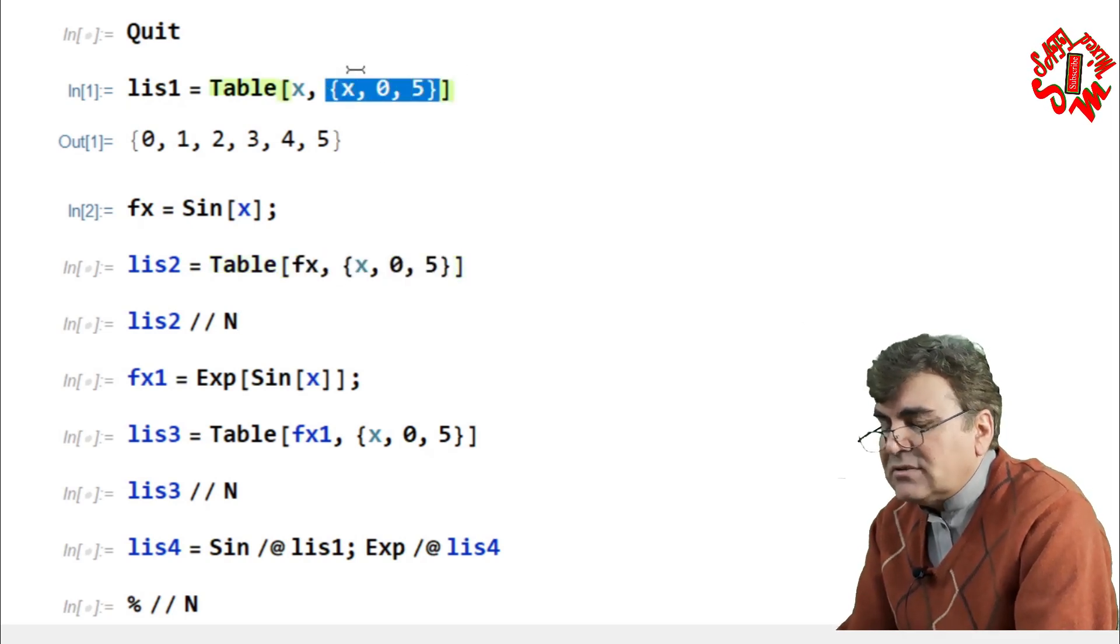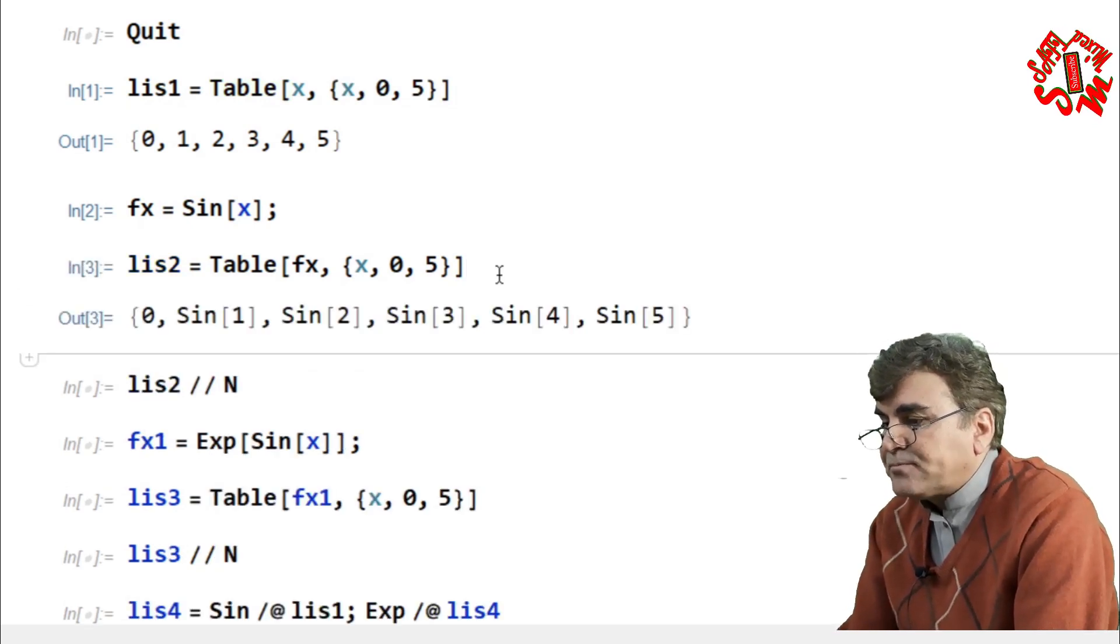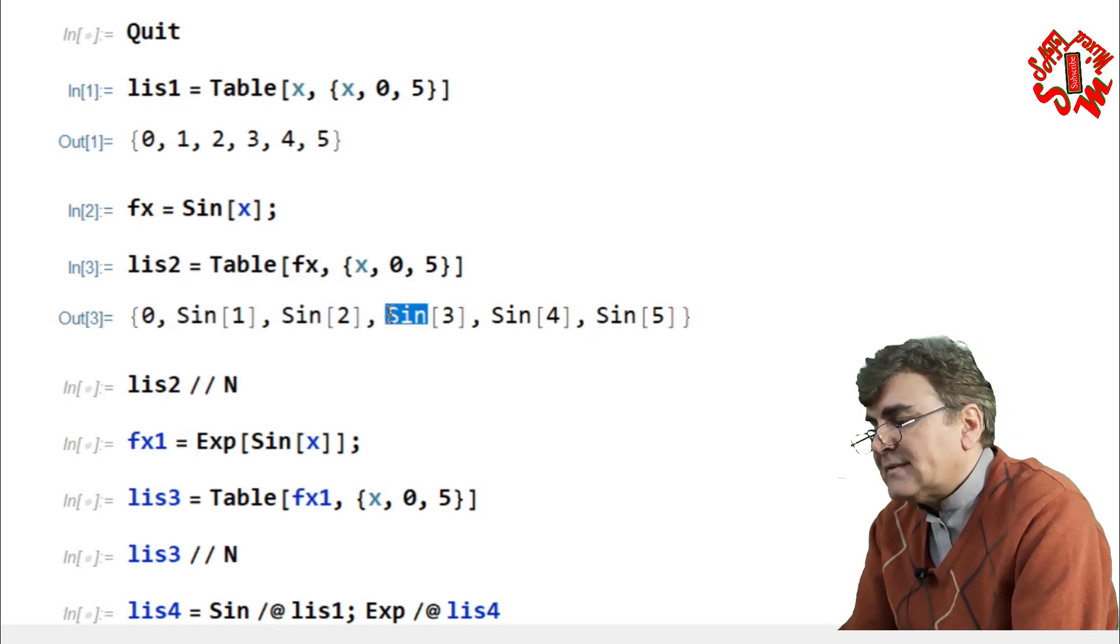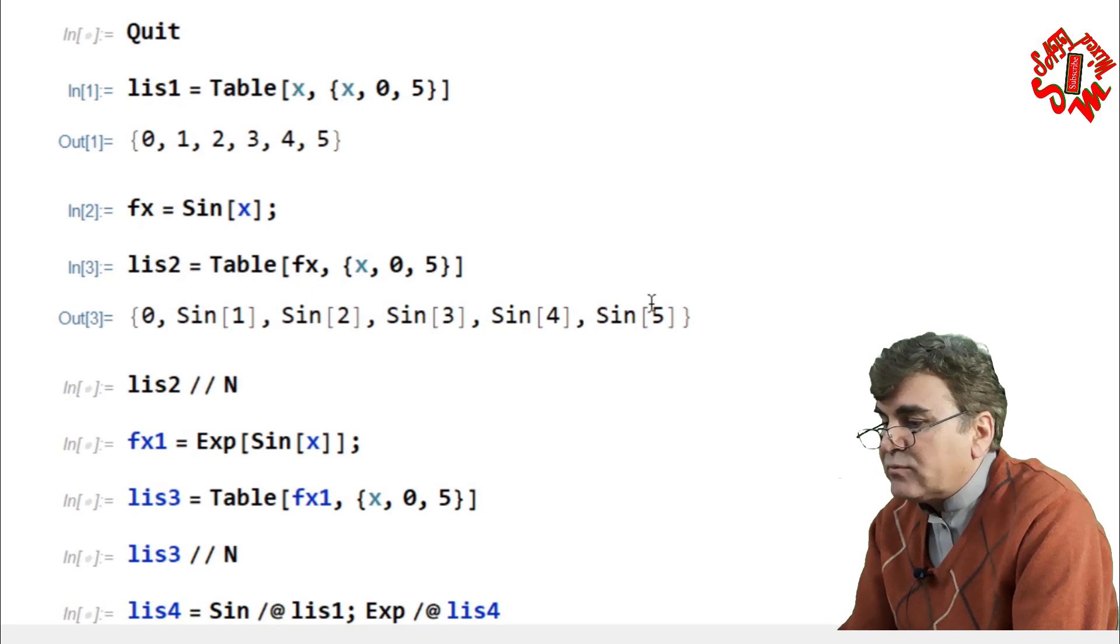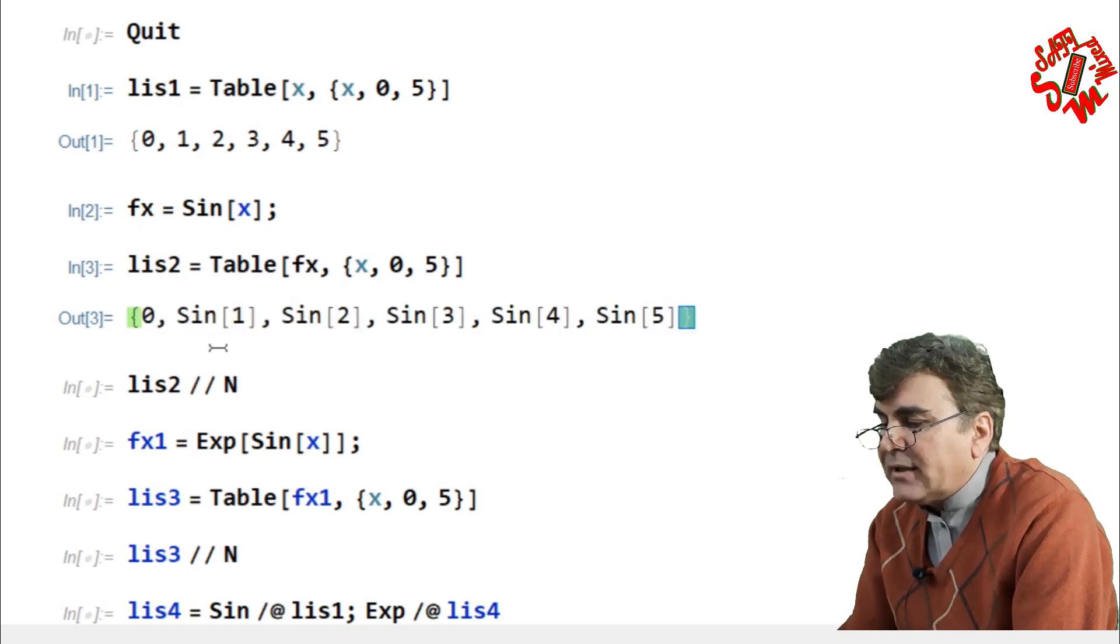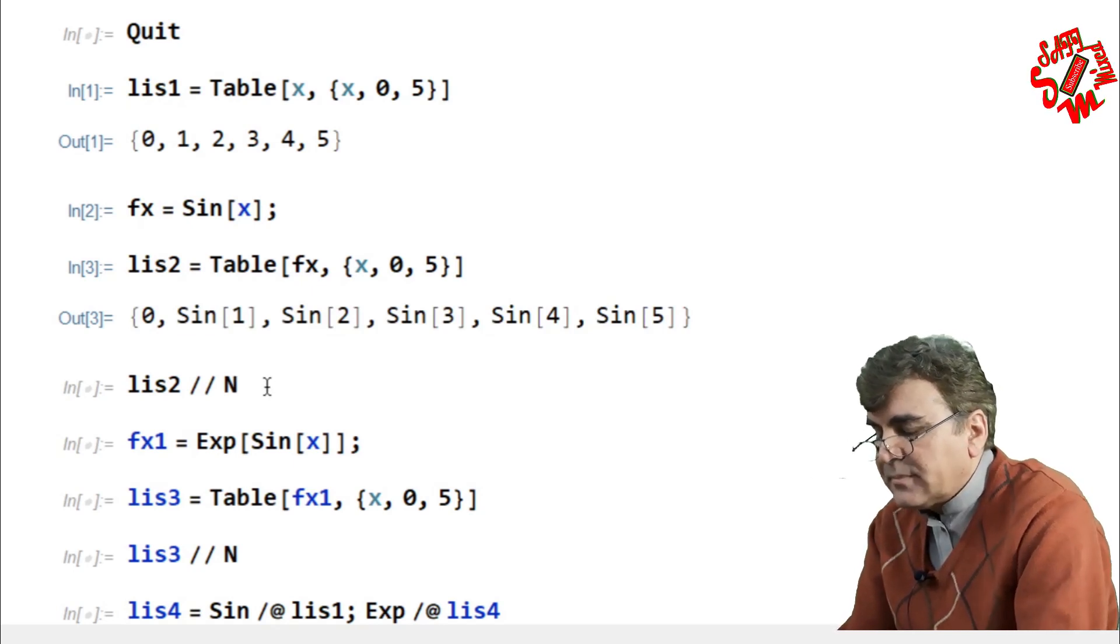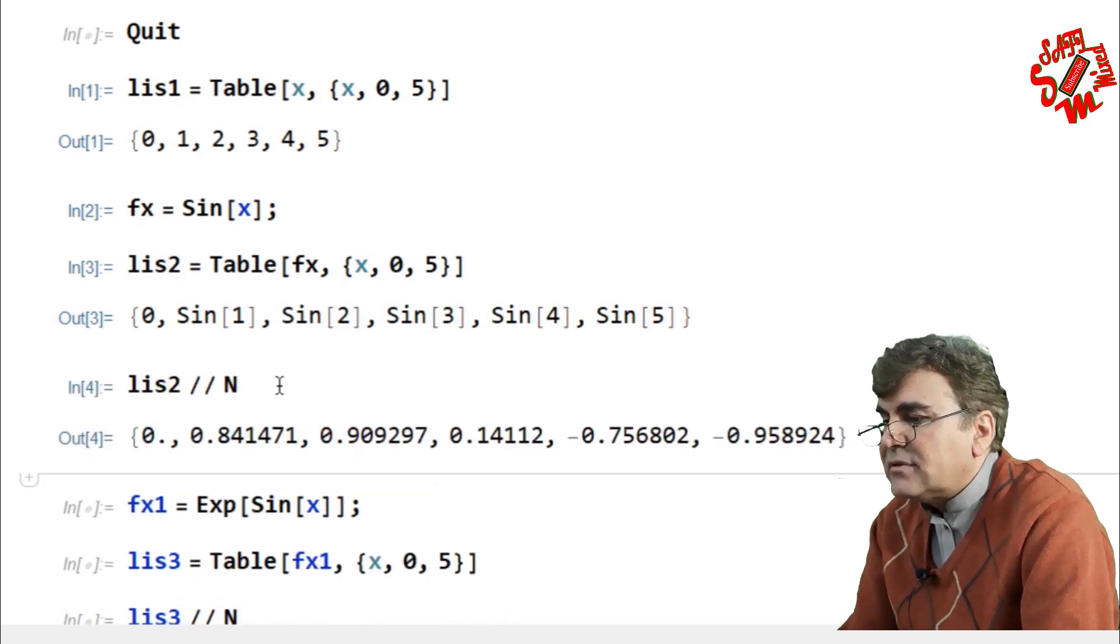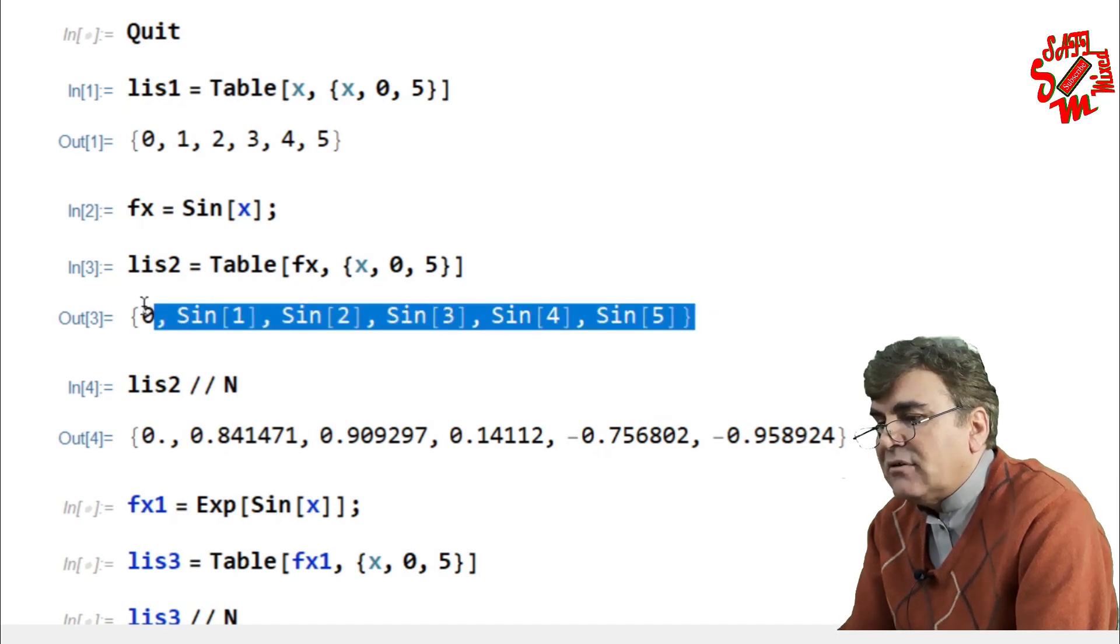If I run this list I see that the function sine is mapped to each value of the list. Here I have zero because sine of zero is zero and then the rest of the elements, the sine function is mapped to each one. And if I want to find the numerical values of this function I just need to run this command and I have the numerical values for each element of the list.